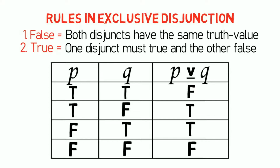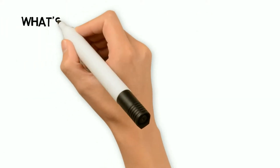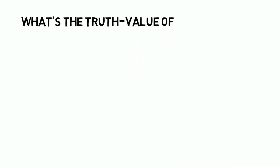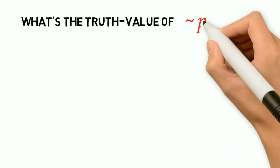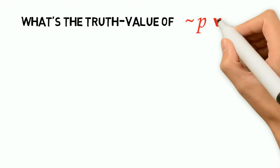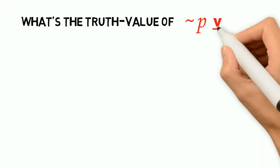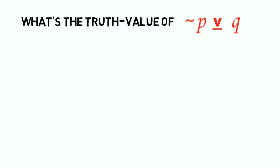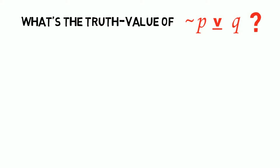If P is false and Q is false, then 'P or Q but not P and Q' is false. Now given the rule in exclusive disjunction, how do we determine the truth value of the exclusive disjunction 'not P or Q, but not (not P and Q)'?